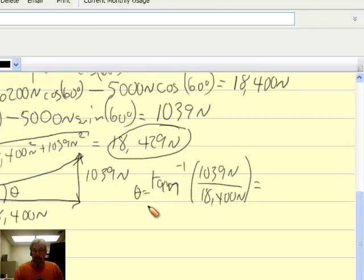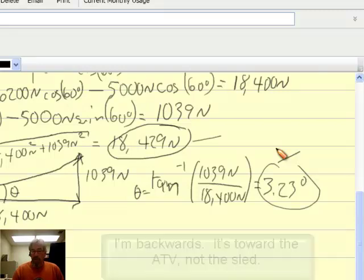well, that should give me what the value of theta is. So I'll calculate that. And it turns out to be 3.23 degrees. So I can say that the resultant here of these three forces is 18,429 newtons at 3.23 degrees towards this.